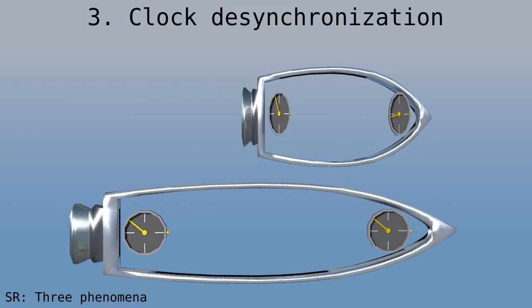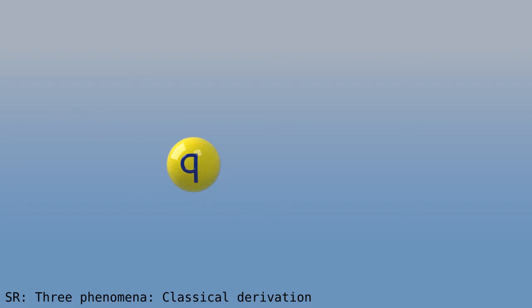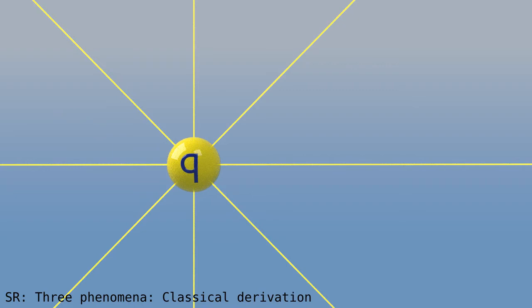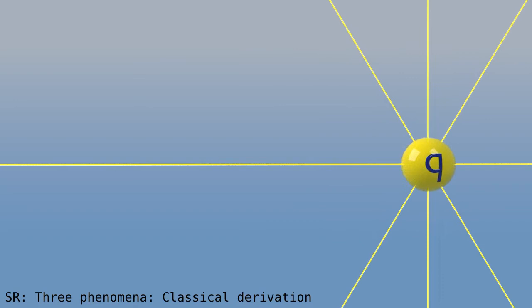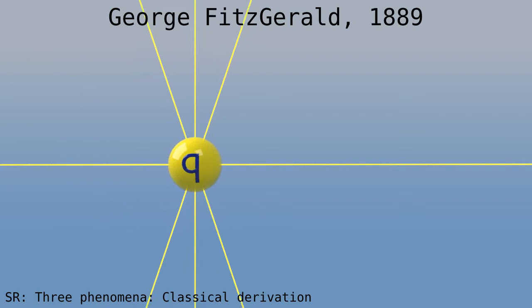So, do objects contract and slow down with velocity? Einstein came up with the theory of special relativity in 1905, but already before him, using classical physics, these phenomena had been predicted. For example, an electric charge has field lines coming out in a symmetric fashion. But when the charge moves, these field lines bunch up as if the field had been contracted. This was noted by George Fitzgerald in 1889, 16 years before Einstein.